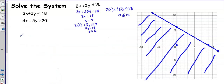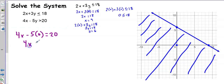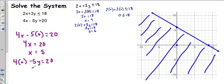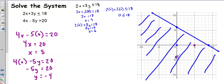Now for the second inequality: 4x - 5y > 20. For the x-intercept, I set y = 0: 4x = 20, so x = 5. For the y-intercept, I set x = 0: -5y = 20, so y = -4. My x-intercept is at 5 and my y-intercept is at -4. This time I'll draw a dotted line since the inequality is strictly greater than.